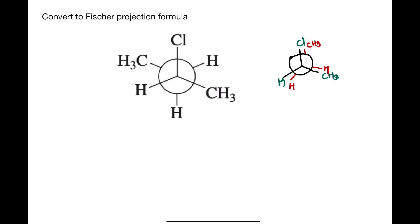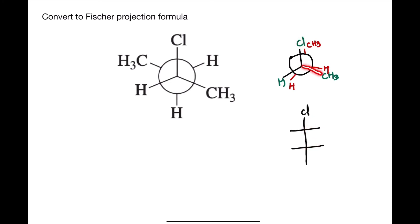Now I want to convert this into Fischer projection formula, for which I have to draw horizontal and vertical lines. Since it has two carbons, this is my carbon in the front and this is my carbon at the back. I'm going to put two horizontal lines, and the intersection of these lines is going to represent the two carbons. My front carbon is connected to Cl, which should be on the top, and whatever is on the right side of the Newman projection formula should also be on the right side in the Fischer projection formula — so I have CH3 on the right.